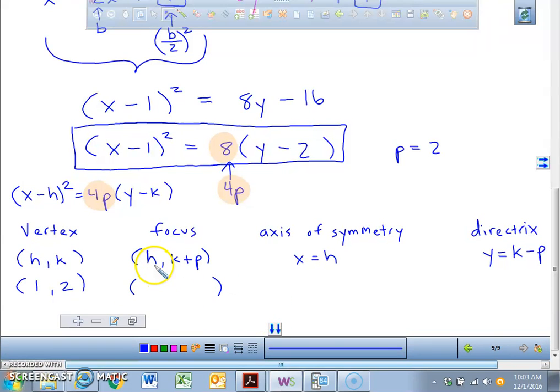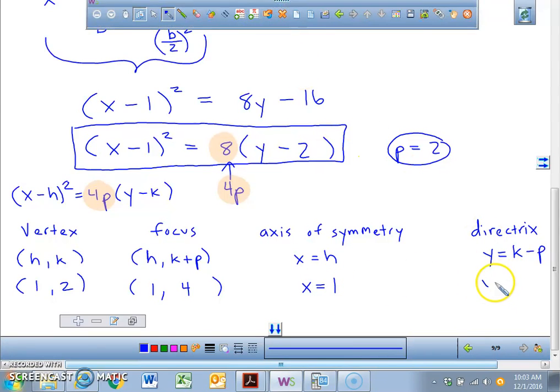So the focus is 1 comma. Now it says k plus your p value. Exactly. So we have k is 2. We found p equal to 2. So 2 plus 2 is 4. So we're going to put a focus at 1 comma 4. The axis of symmetry will be a vertical line going through all x values that are 1. We're going to draw this here in a second. So your axis of symmetry is x equals 1. And your directrix is going to be y equals the k value, which is a 2 minus a 2, which gets to be y equals 0.